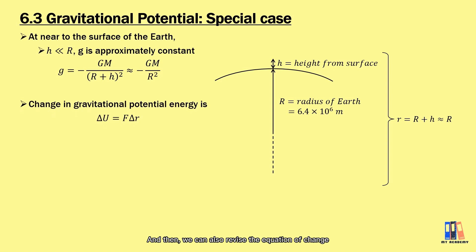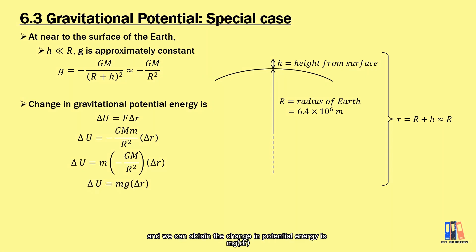We can also revise the equation of change in potential energy. We can substitute in the equation g = -GM/r² and obtain the change in potential energy is mg∆r. The change in distance is also the change in height when we're talking about somewhere near the surface of the Earth.